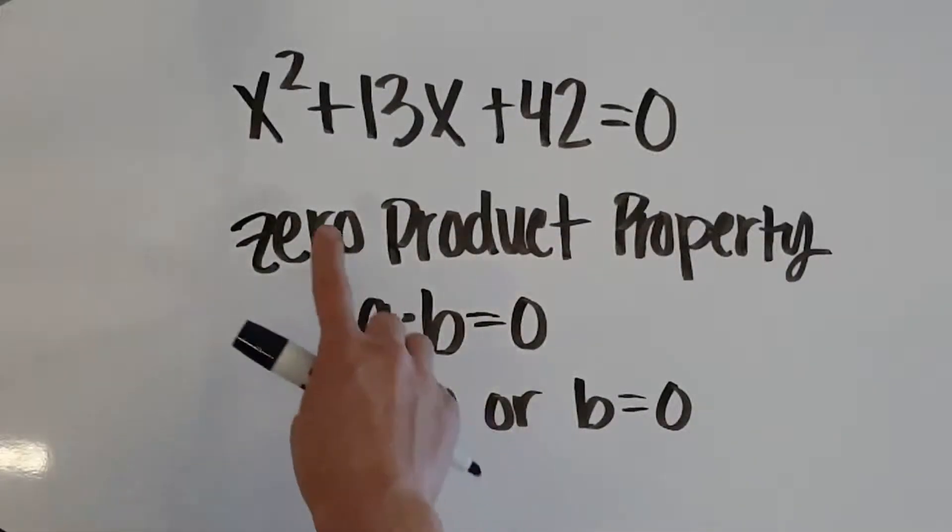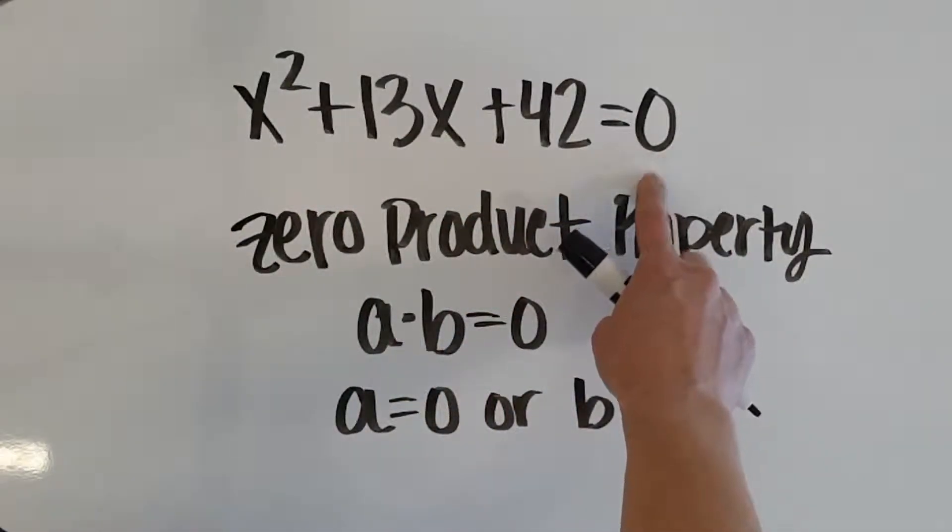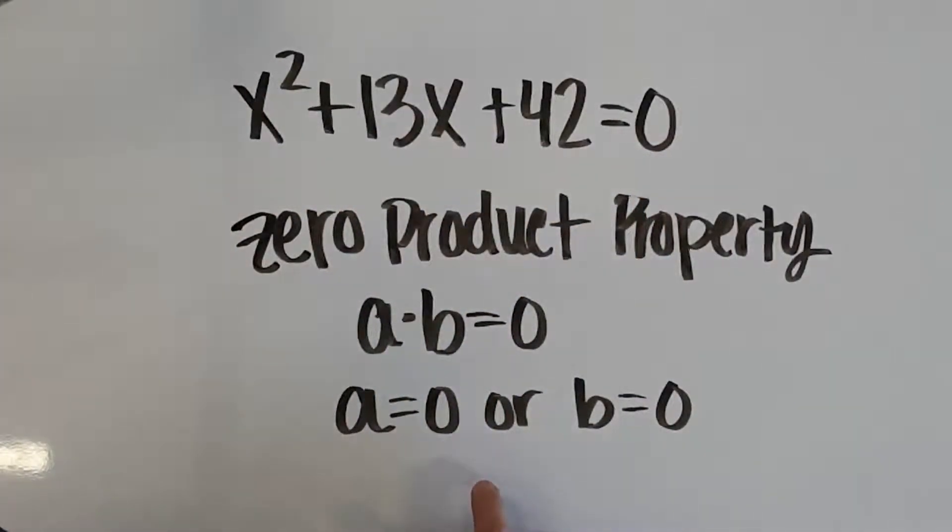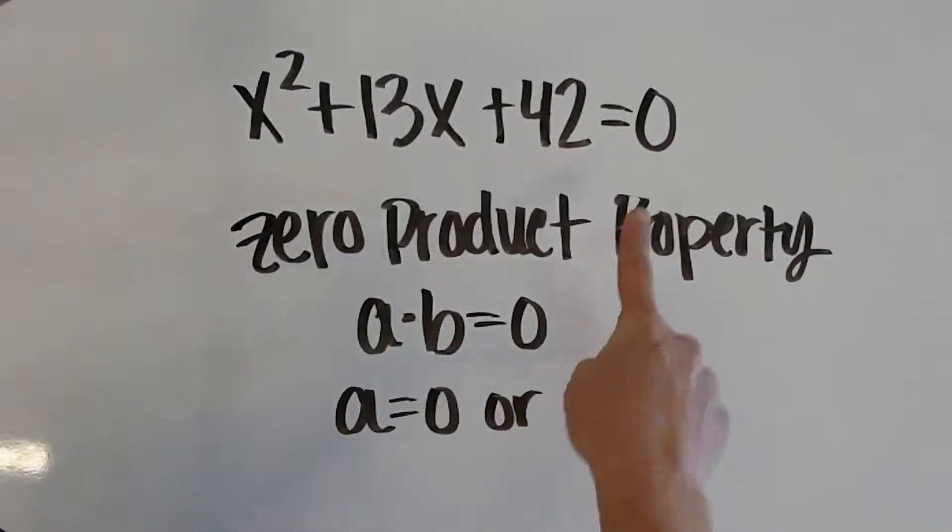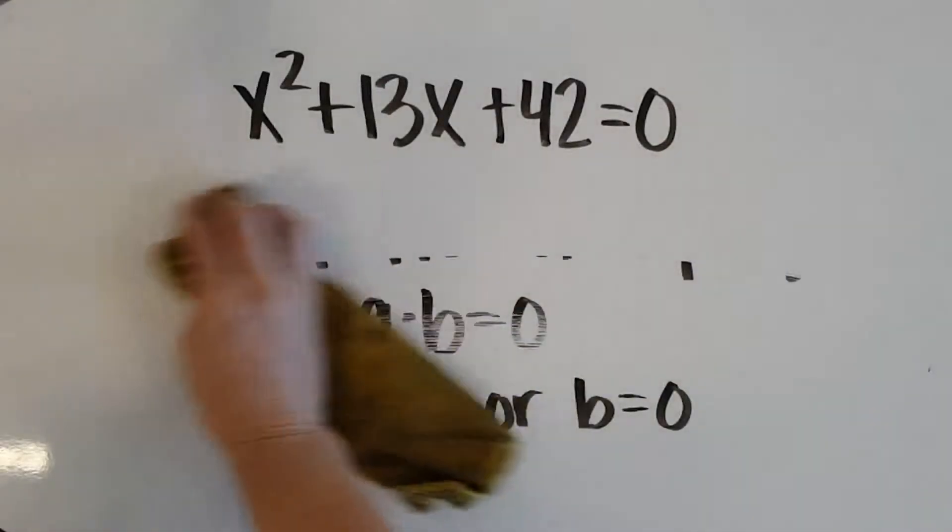This is important because whenever we solve quadratic equations by factoring, we always want it to be equal to 0 so that I can apply this zero product property. So when we solve, step one is always going to be to get it equal to 0, which we have.